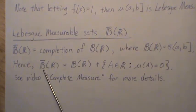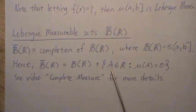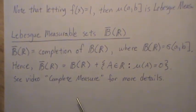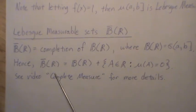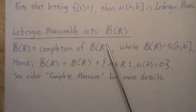Hence, the closure of the Borel sets—the Borel sets with this sigma field plus any set in ℝ that has Lebesgue measure zero—those are called Lebesgue measurable sets, the closure of the Borel set. I have a video called 'Complete Measure' for more details if you're interested.